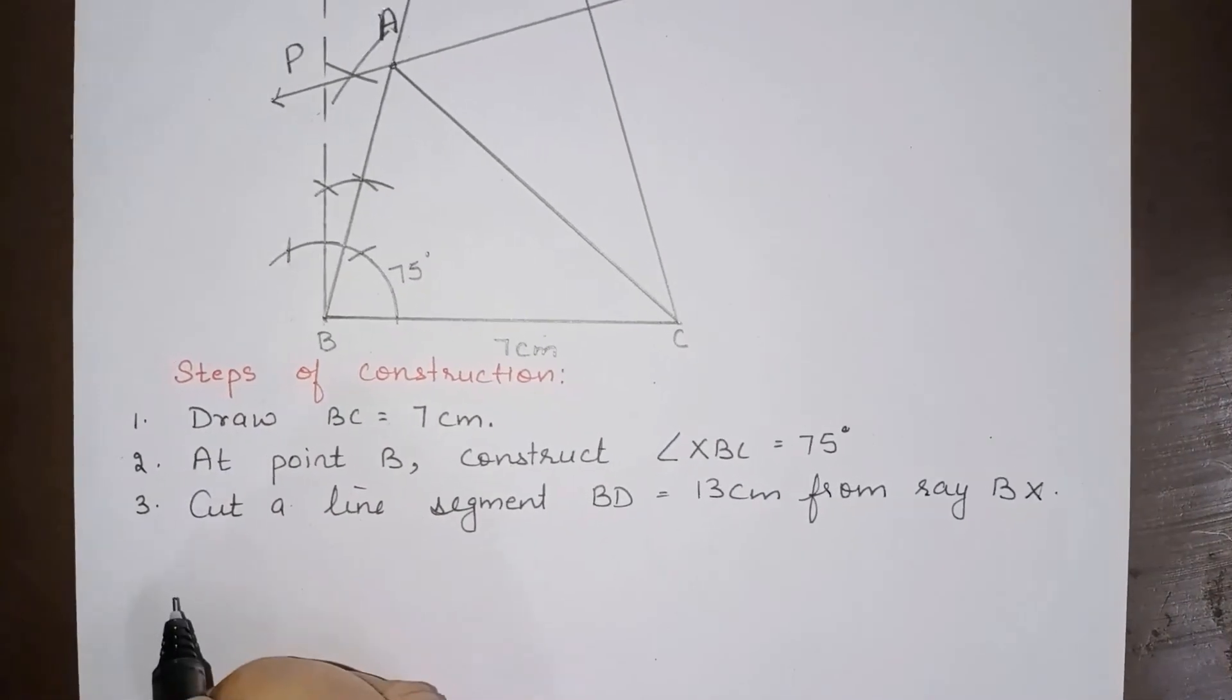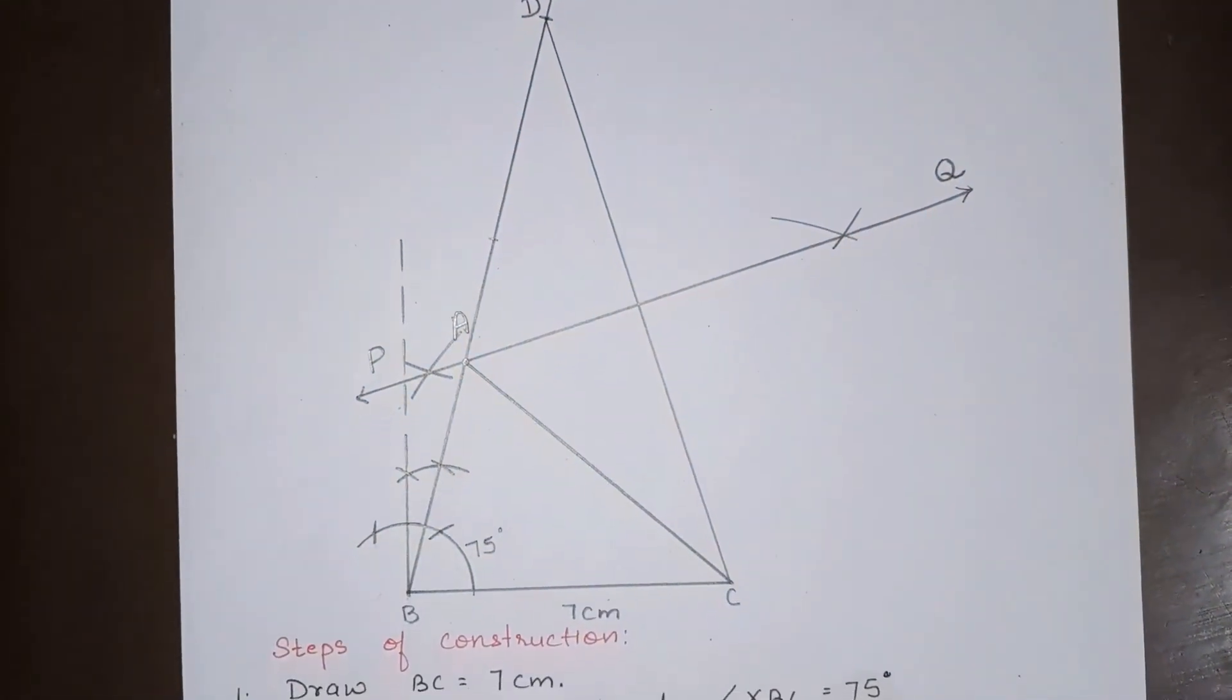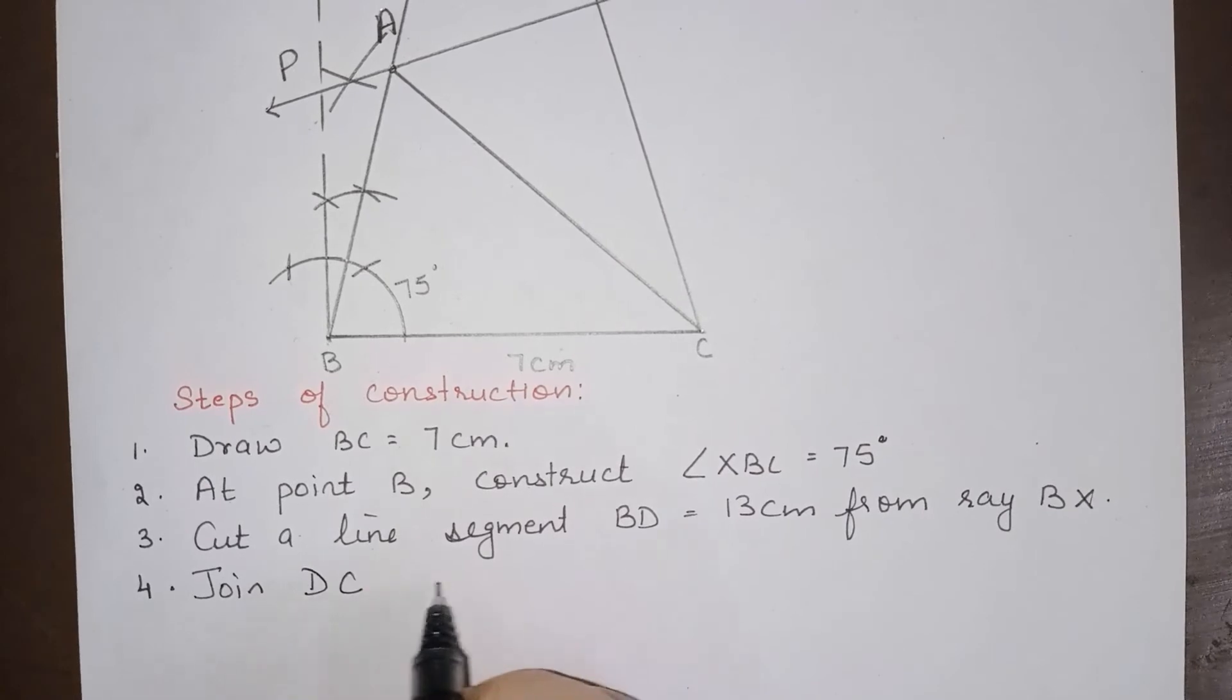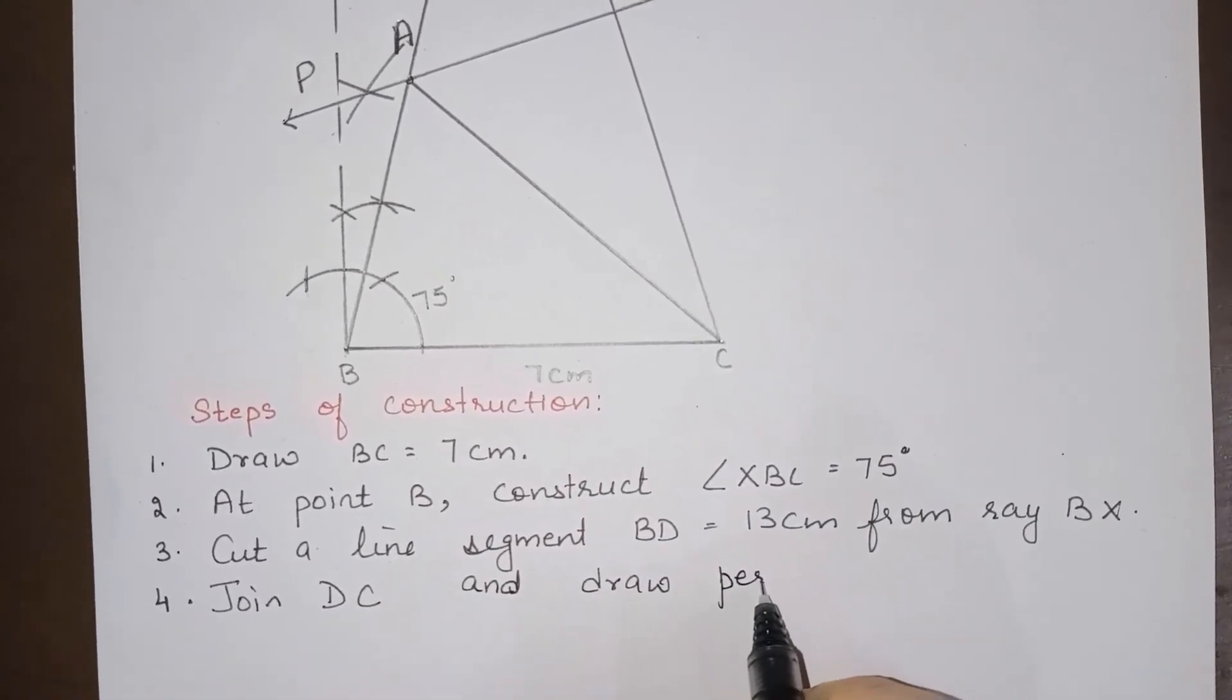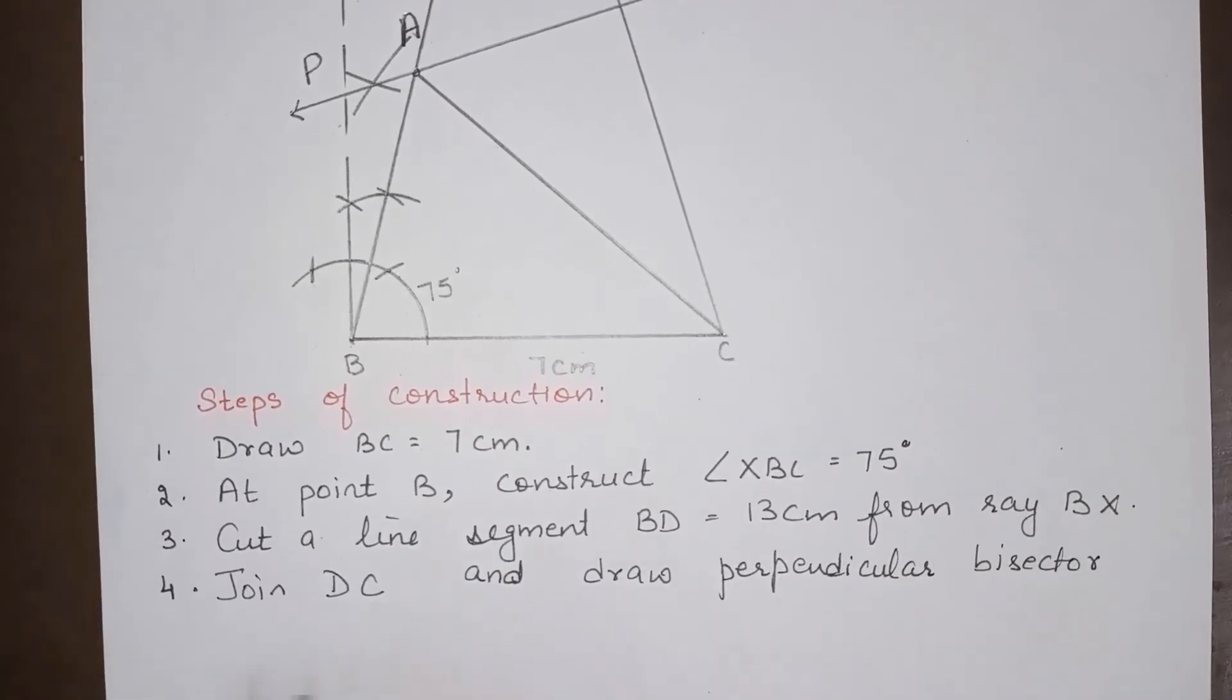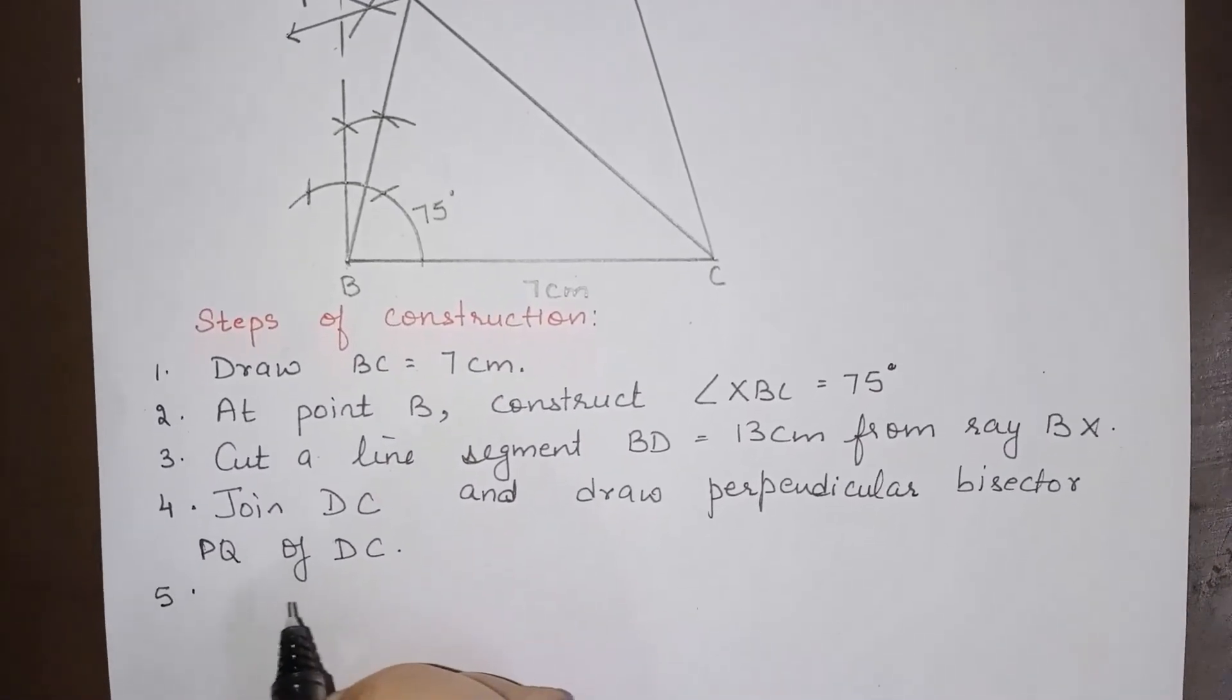So after that, what we have done? After that, after drawing this BD equals 13 centimeters, we have joined CD. So join DC and draw perpendicular bisector PQ of DC. Fifth point will be: let PQ...